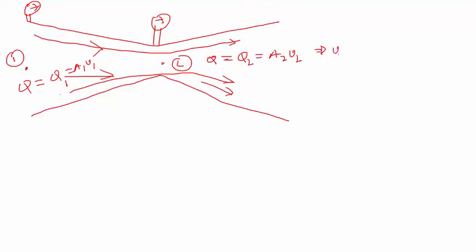So we can solve for V here. V2 is equal to Q by A2. Also here we can write down that V1 is equal to Q by A1.